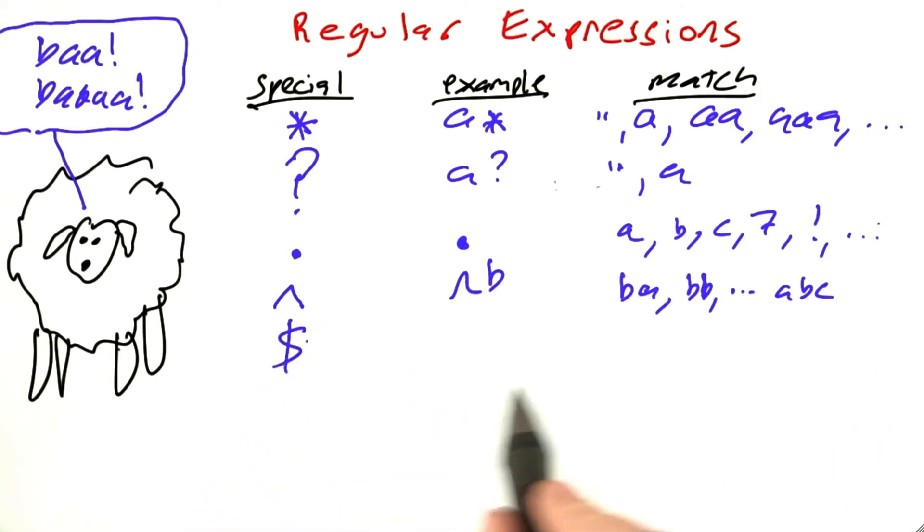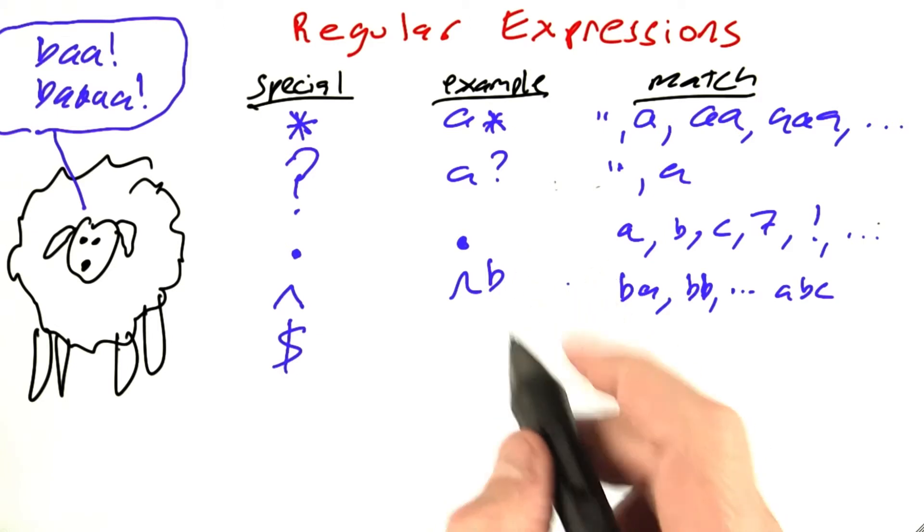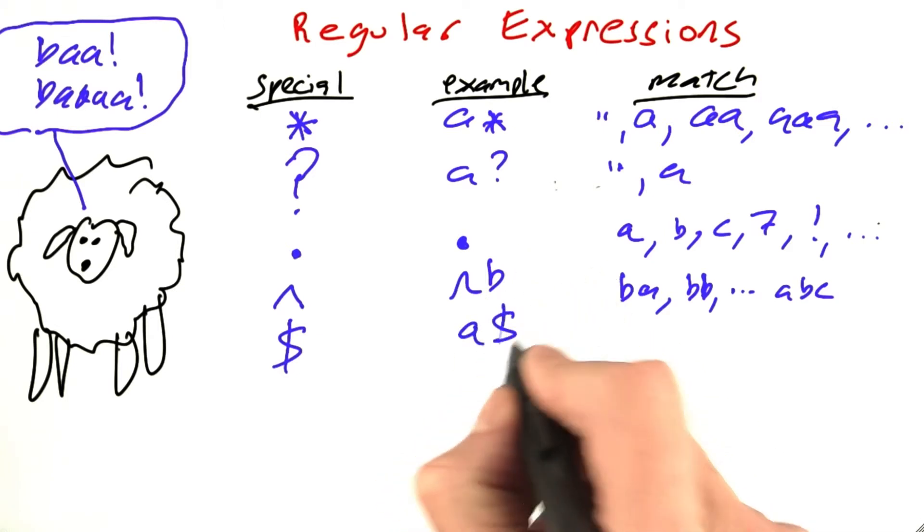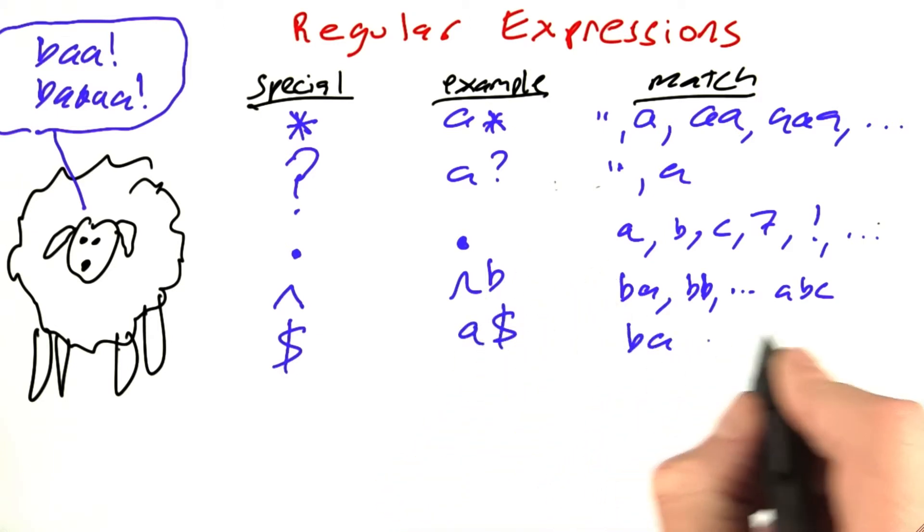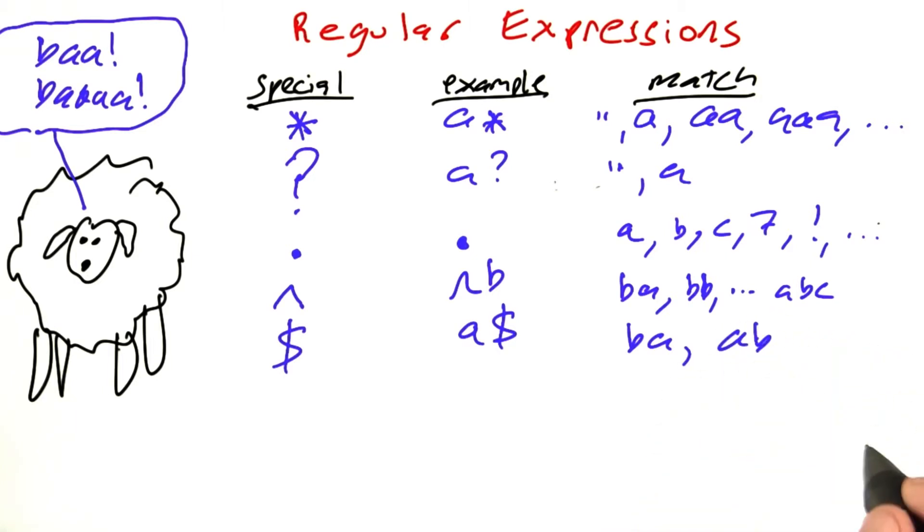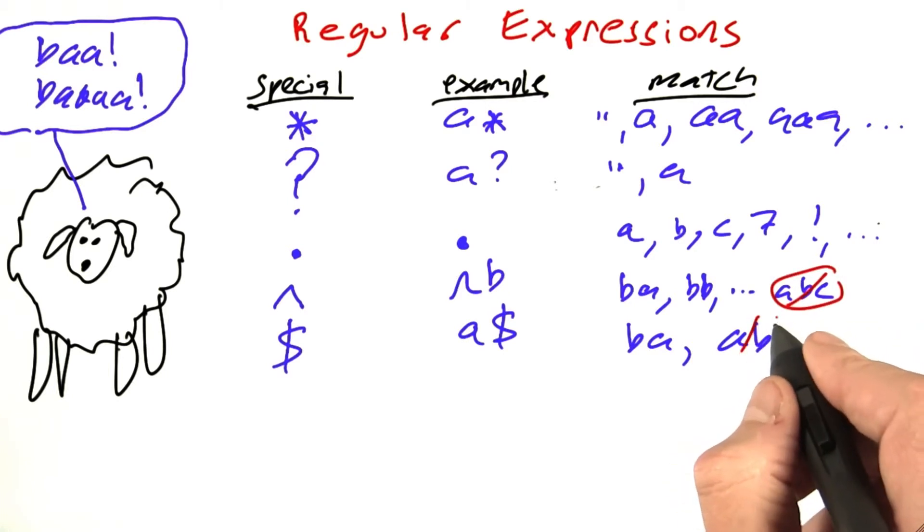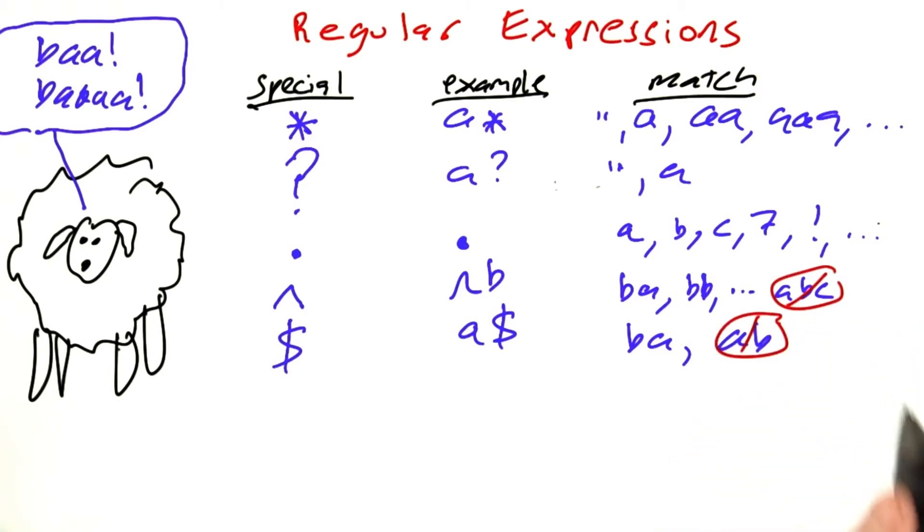dollar sign is the convention for matching at the end. So, A dollar sign matches BA, but doesn't match, say, AB, or anything else where the A isn't at the end. So let's correctly strike these out to say that these are not matches for these two patterns.